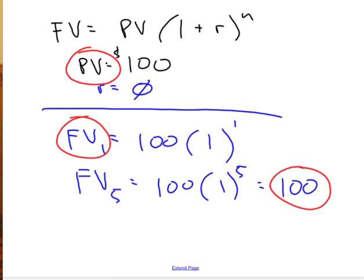What if the interest rate was 0? Well, if the interest rate is 0, as you might figure intuitively, the present value and the future value are going to be the same. If the interest rate is 0, the future value after one year is 100 times 1 plus 0. 100 times 1 to the first, $100.